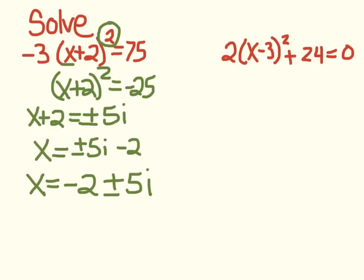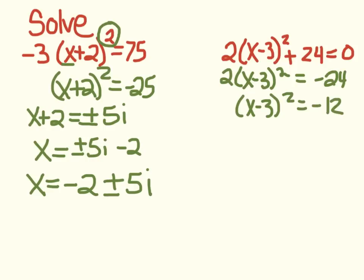Alright, this next one. So now this time, it's equal 0, so we've got one more step we have to do. We have to actually subtract the 24 first, and then divide by 2, and then take the square root, plus or minus, and we've done the square root of 12 several times now as examples. Square root of 12 is 2 root 3, with a negative would be 2i root 3, and then we have to add the 3.